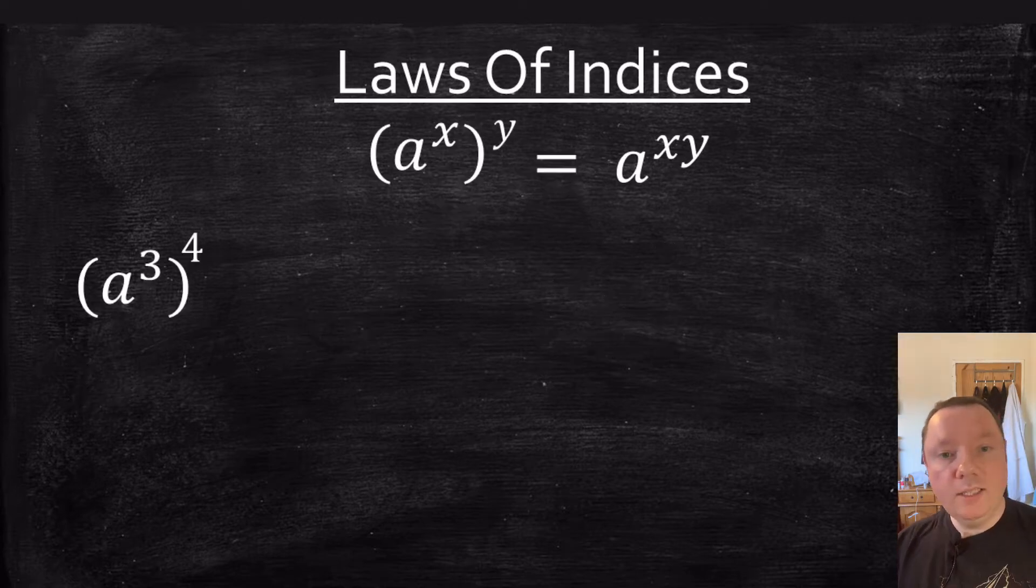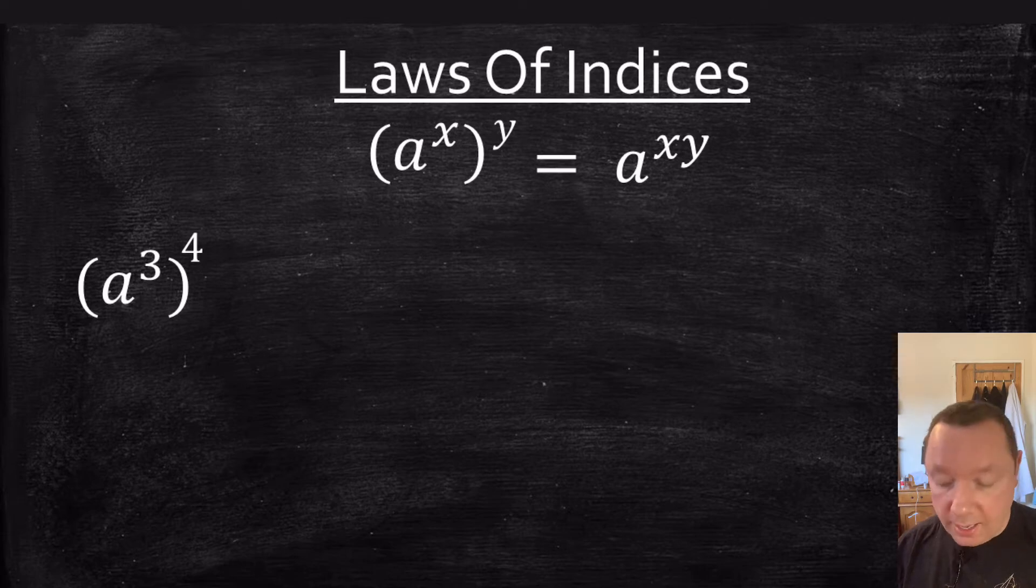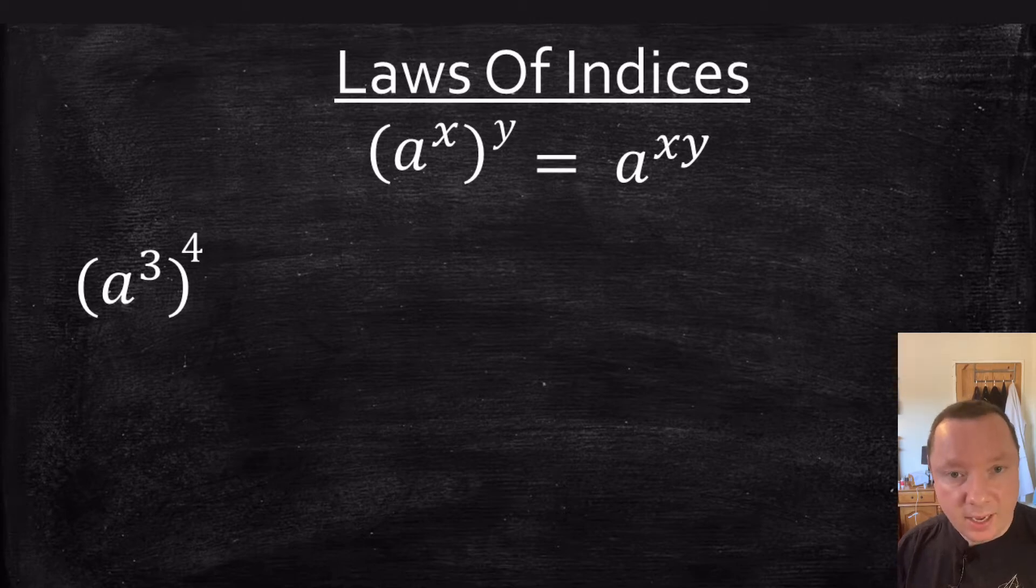Nice and simple. Next law of indices: a to the power of x to the power of y. That is just a to the power of x times y. You can just times the indices together as long as that base is the same.